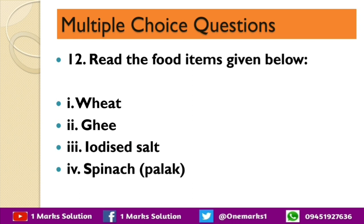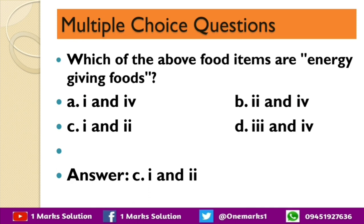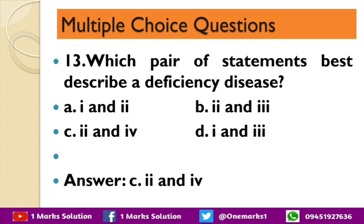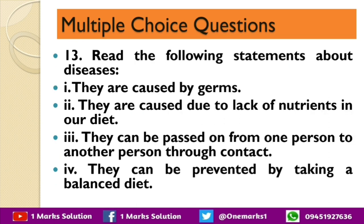Read the following statements about disease: they are caused by germs; they are caused due to lack of nutrients in our diet; they can be passed from one person to another through contact; they can be prevented by taking a balanced diet. Which pair best describes a deficiency disease? The correct answer is statement two and four — lack of nutrients, and prevention by a balanced diet.